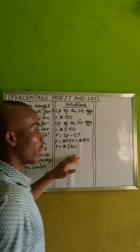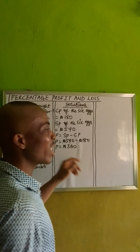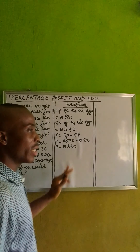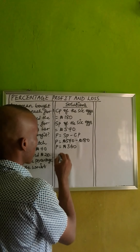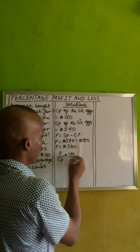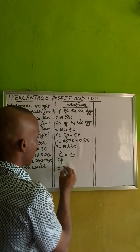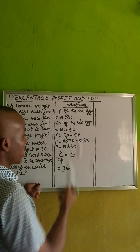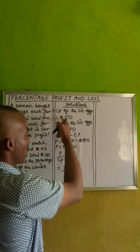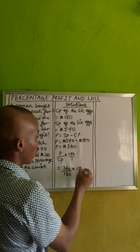Now we've gotten the profit. But the question says we are not to find profit — the question says what is the percentage of this profit? We then apply our formula for percentage profit, which is profit over cost price multiplied by 100 over 1. We then have: what's the profit from here? That's 360 over — what is the cost price? The cost price of the 6 eggs from here is 180, multiplied by 100 over 1.